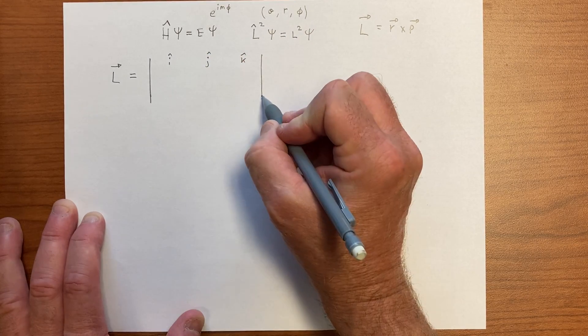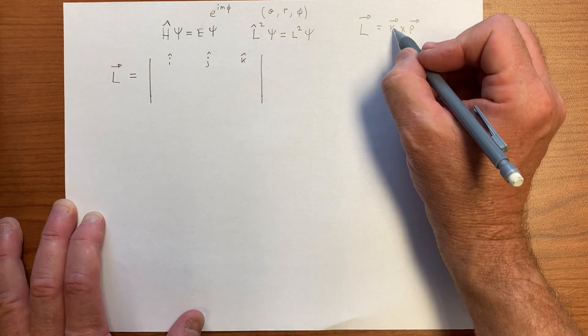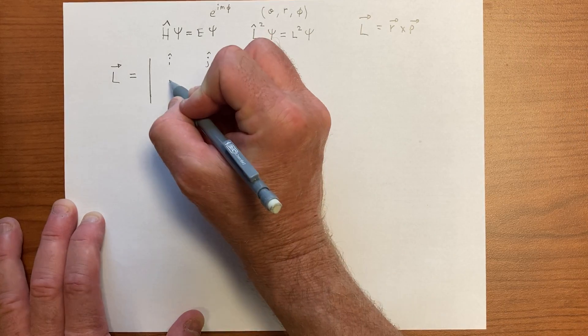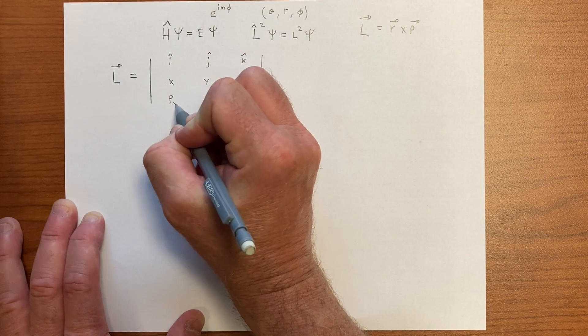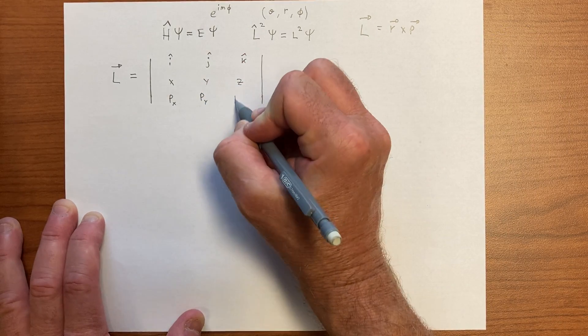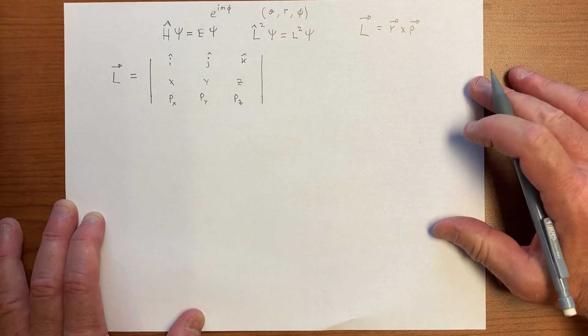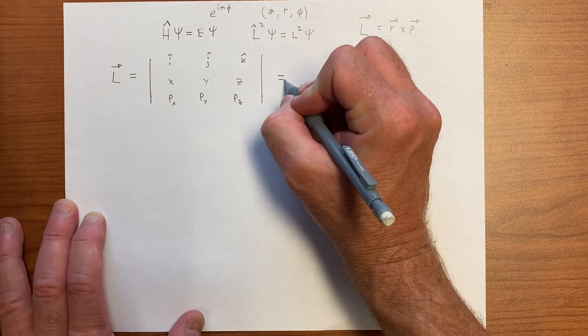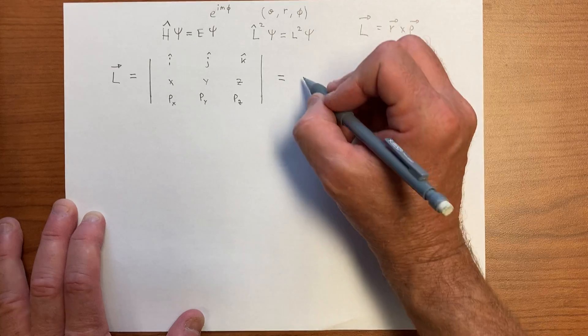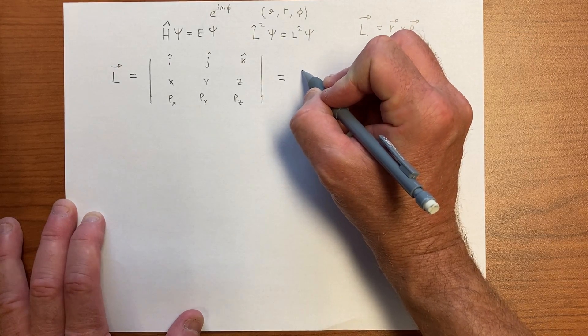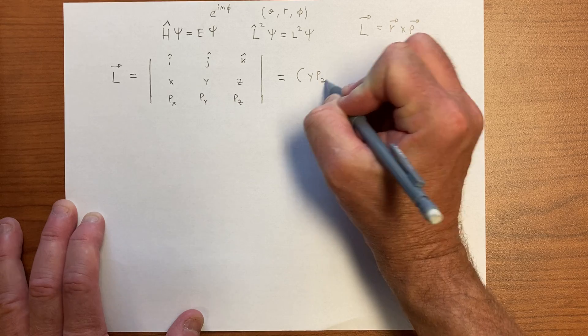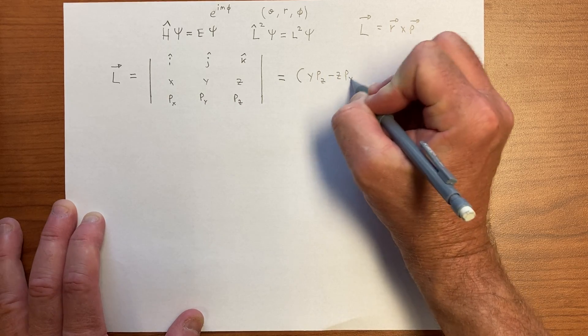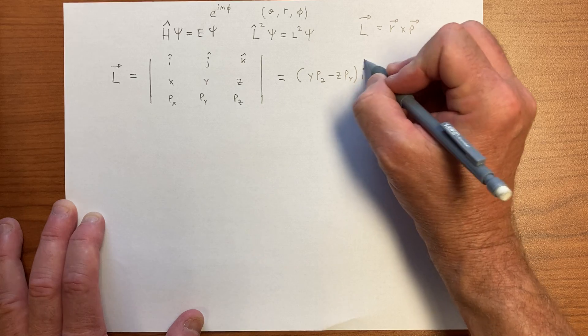And we have r, so that in these coordinates would be x, y, and z. Of course here we have p_x, p_y, and p_z, and we know that the determinant gives us y p_z minus z p_y i hat.